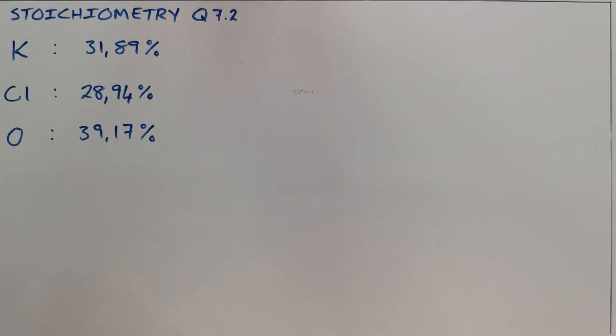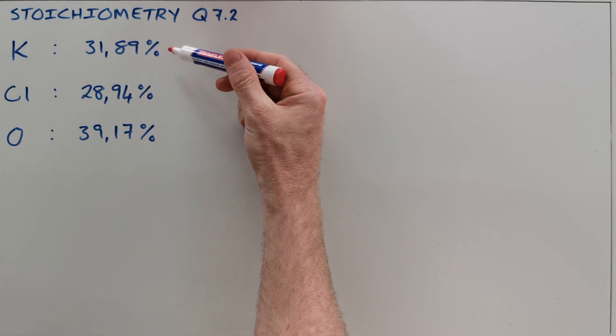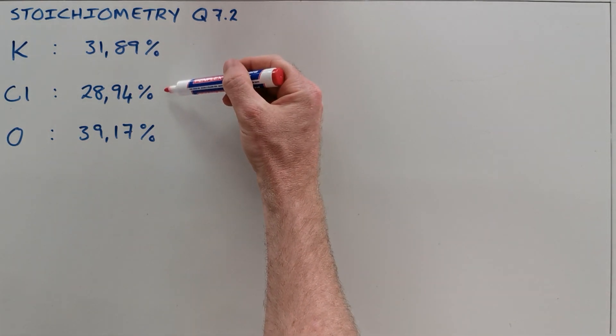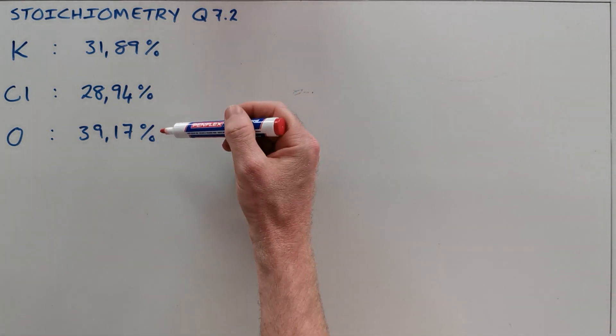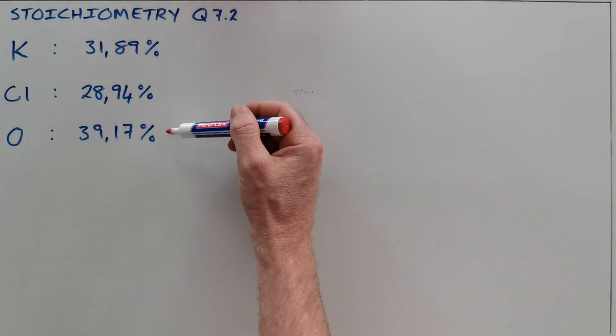In question 7.2 of the stoichiometry tutorial, you're asked to calculate the empirical formula for a substance that contains 31.89% potassium, 28.94% chlorine, and 39.17% oxygen.